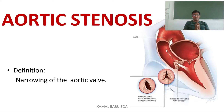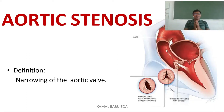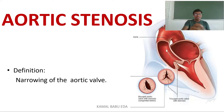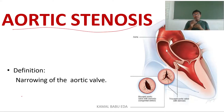Since we have already discussed valvular heart diseases, we know what stenosis, regurgitation, and prolapse mean. Stenosis means nothing but the narrowing or constriction of any part. Since it is involving the aortic valve, the narrowing of the aortic valve is considered as aortic stenosis.